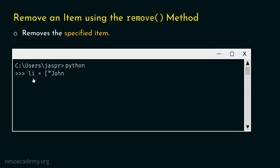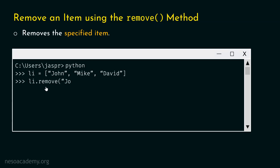Let's type the command: li equal to john, mike, david. We have this list which consists of three items: john, mike, and david. Let's say we want to remove the item john from this list. We can pass this item to the remove method in order to remove it. So let's type li dot remove john and hit enter. With this, we would be able to remove john from this list. Let's type li again to check — we will get the list where john is not available.